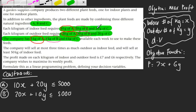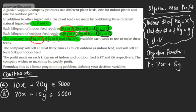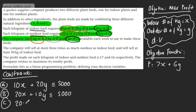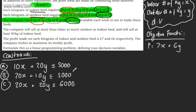For ingredient C, we have 20 grams of C per kg of indoor feed, and 20 grams of C per kg of outdoor feed, with 6 kilograms available. So 20x plus 20y must be less or equal to 6,000. That can be simplified quite a bit, which I'll do at the end.